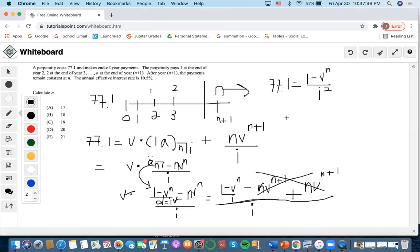Now we need to solve for n. We convert v^n to the regular format of 1/(1+i)^n.